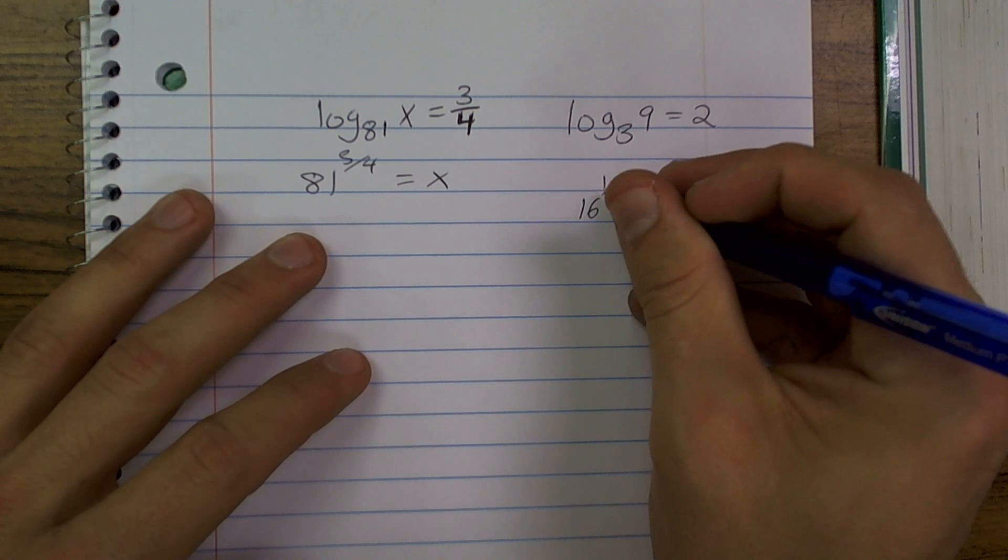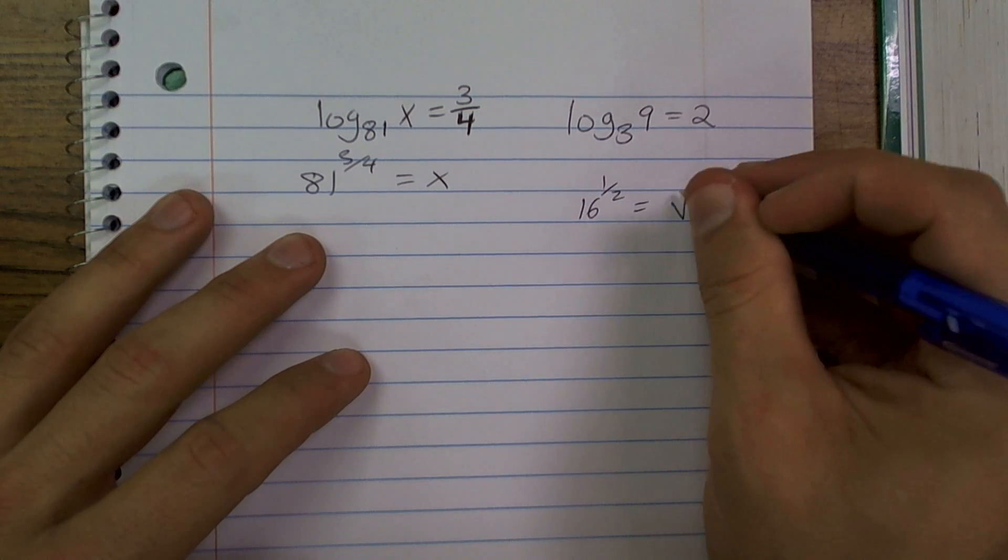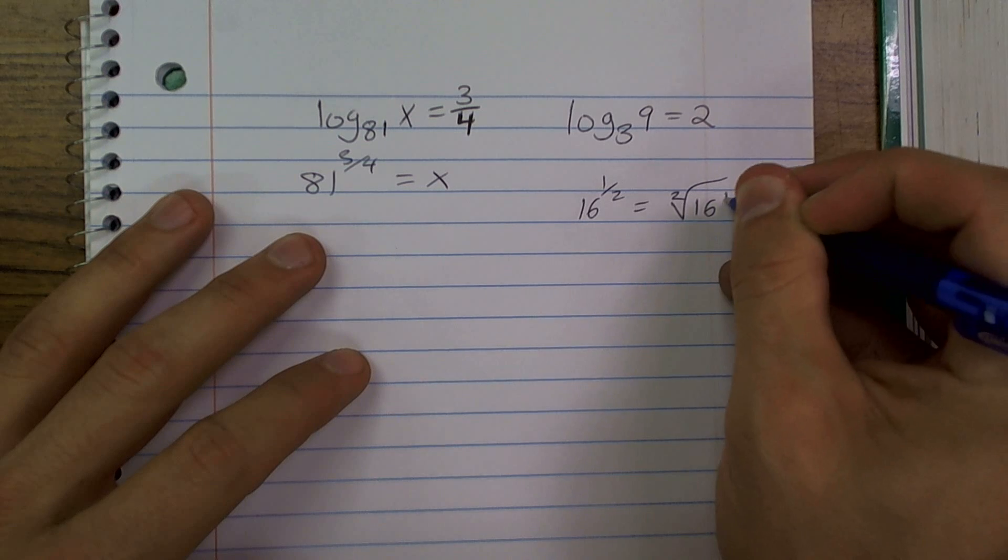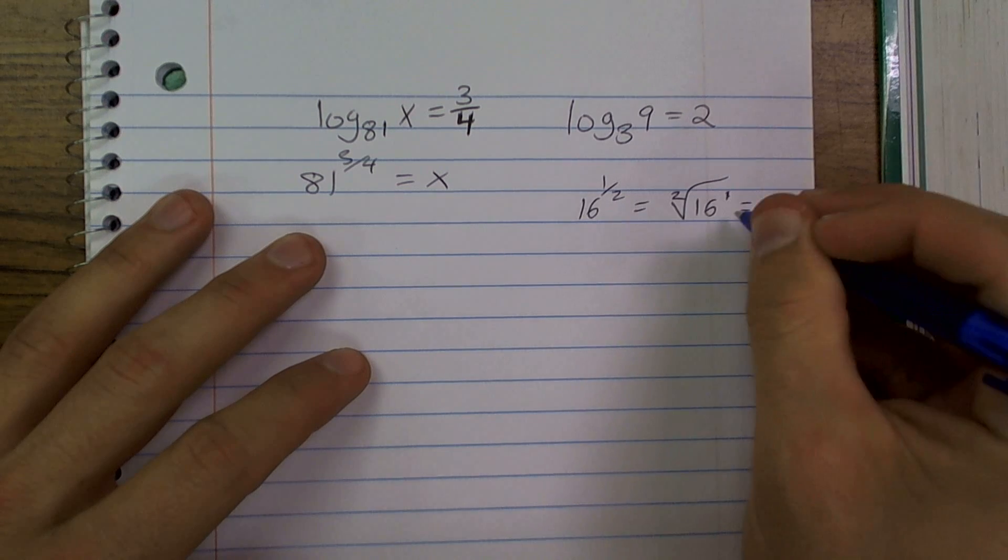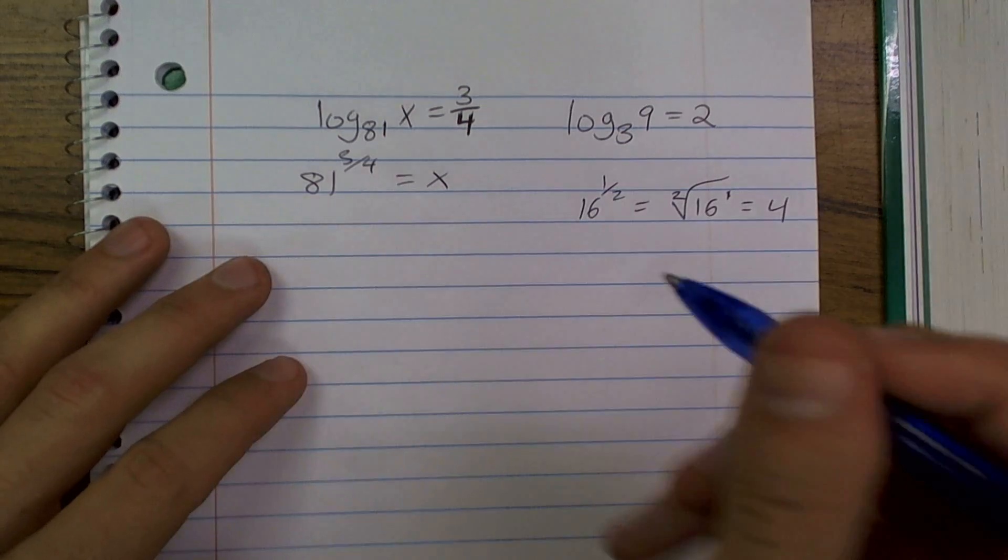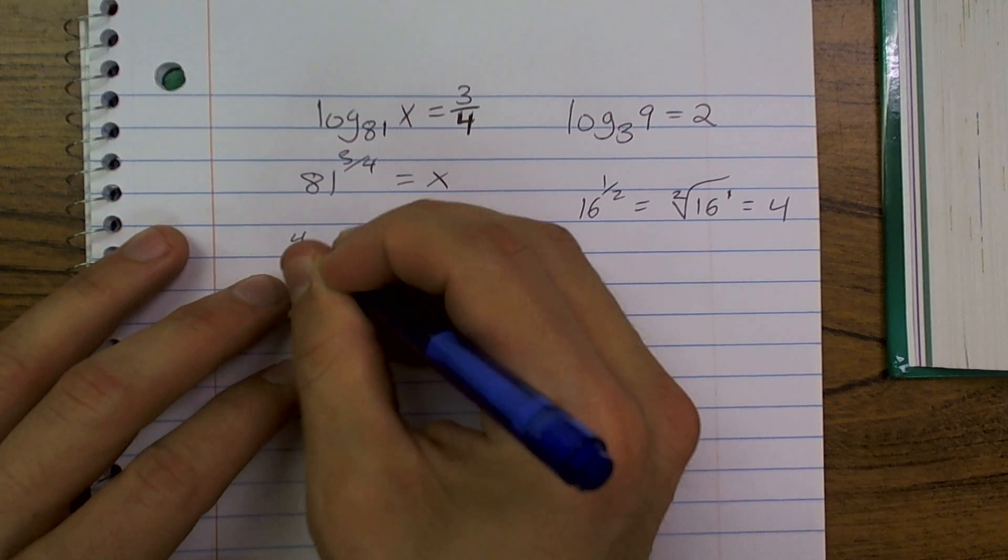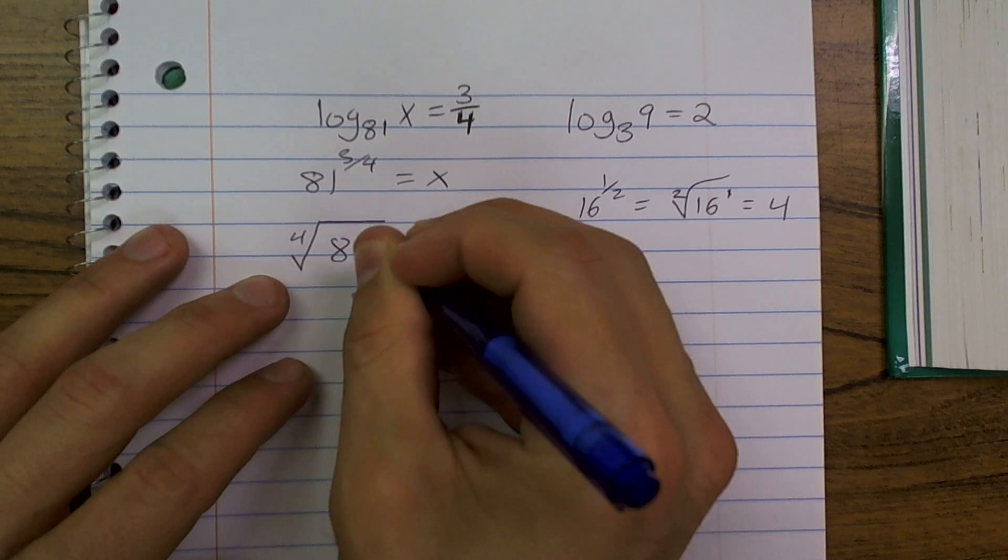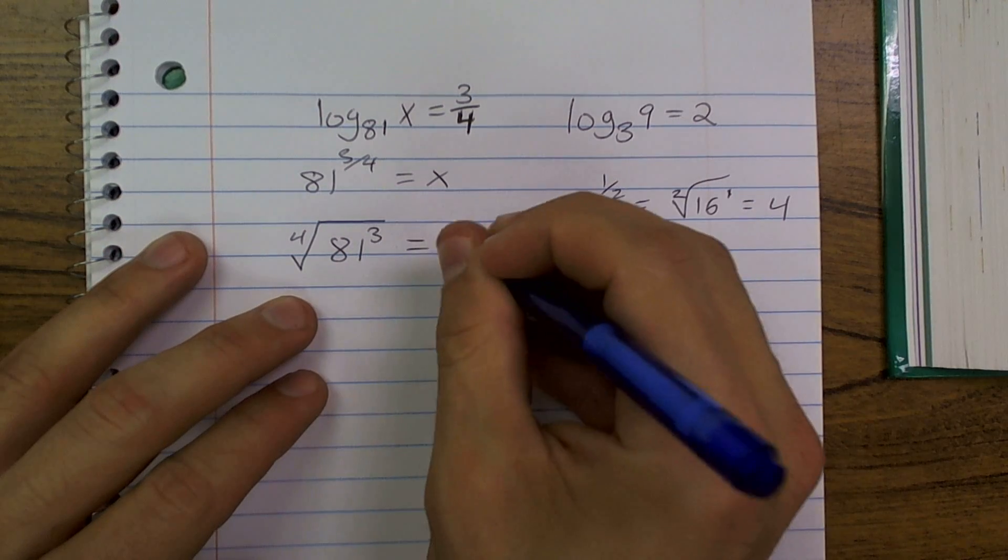...that means the square root of 16 to the first, which we know the square root of 16 is 4. So we could write this as the fourth root of 81 to the third power equals x.